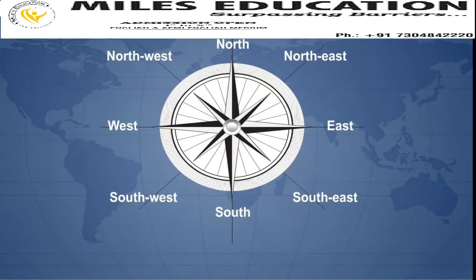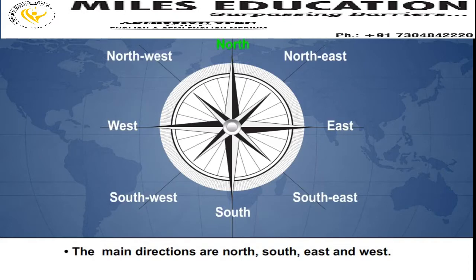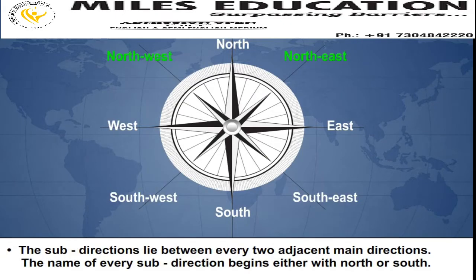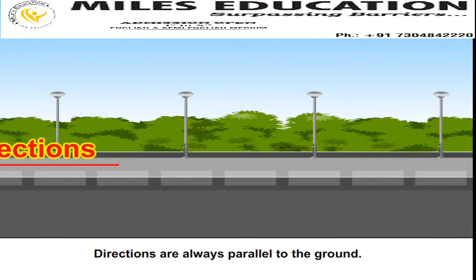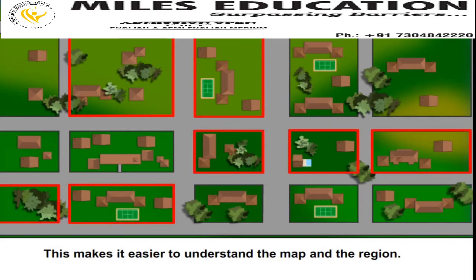Compass Rows. We can study and identify the directions and sub-directions with the help of the compass rows. The main directions are North, South, East and West. The sub-directions are North-East, North-West, South-East and South-West. The sub-directions lie between every two adjacent main directions. The name of every sub-direction begins either with North or South. Directions are always parallel to the ground. A map must always be aligned to the local directions, which makes it easier to understand the map and the region.